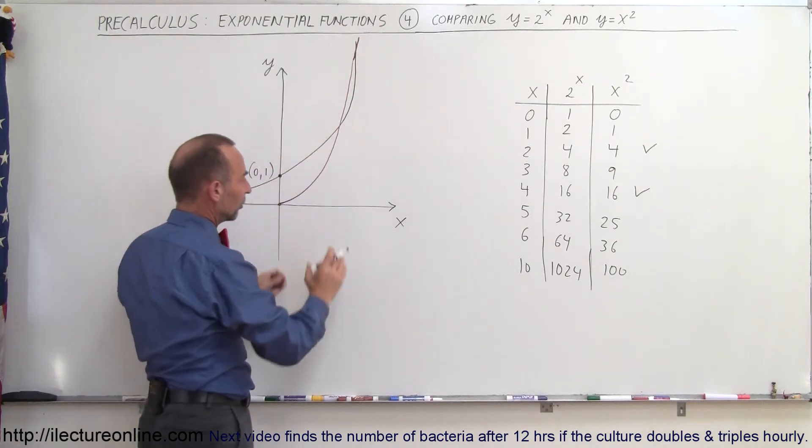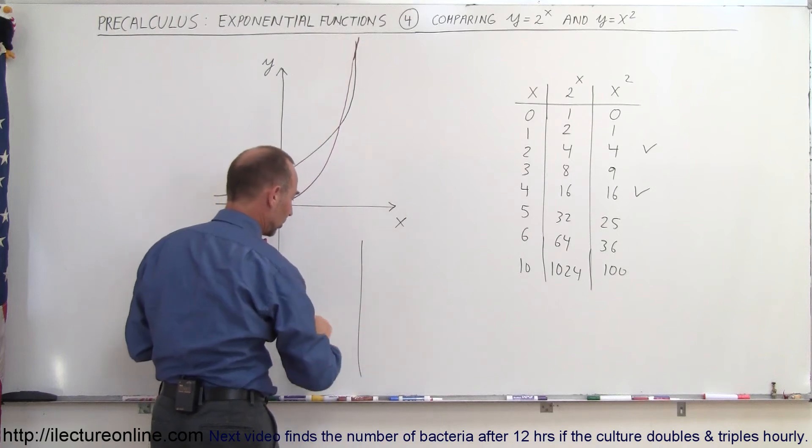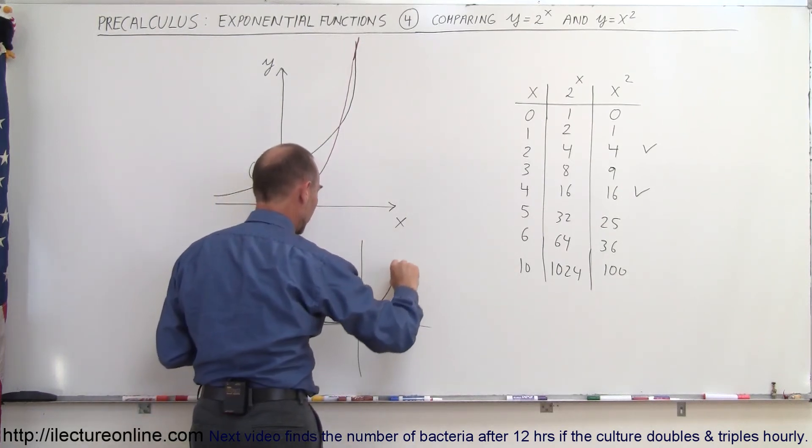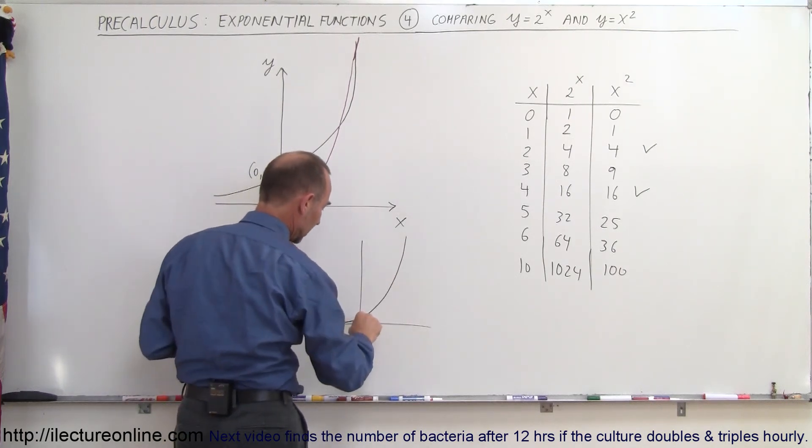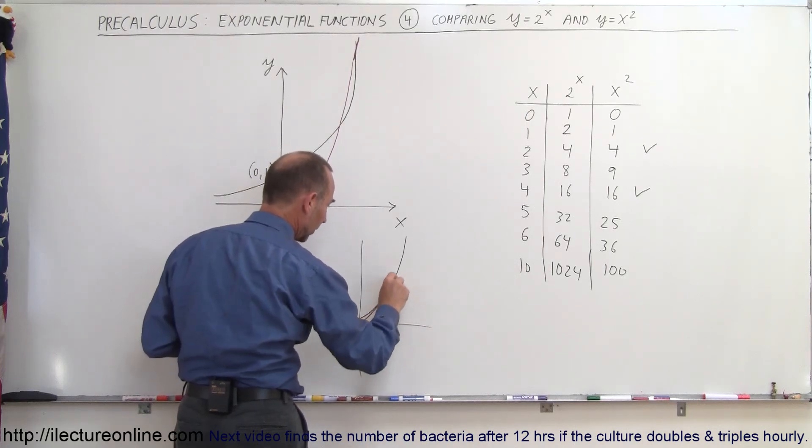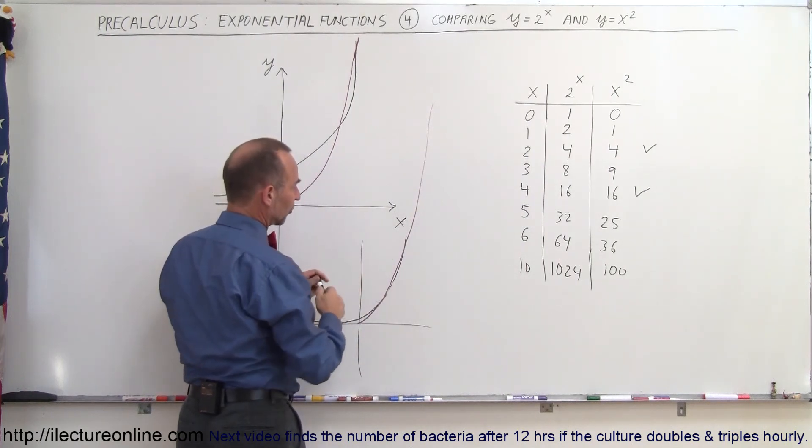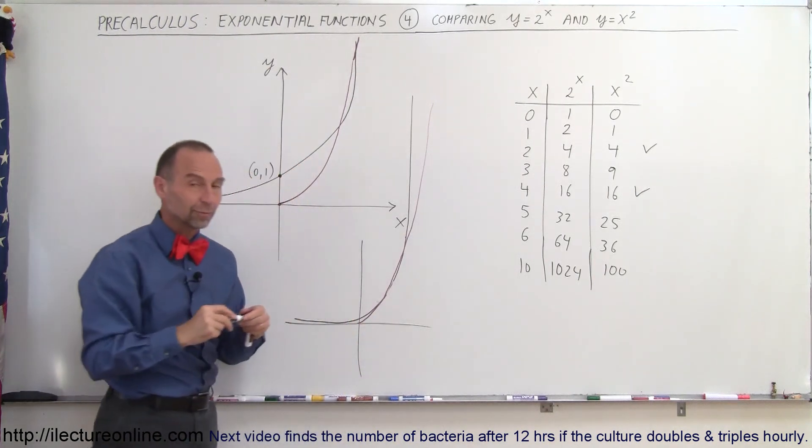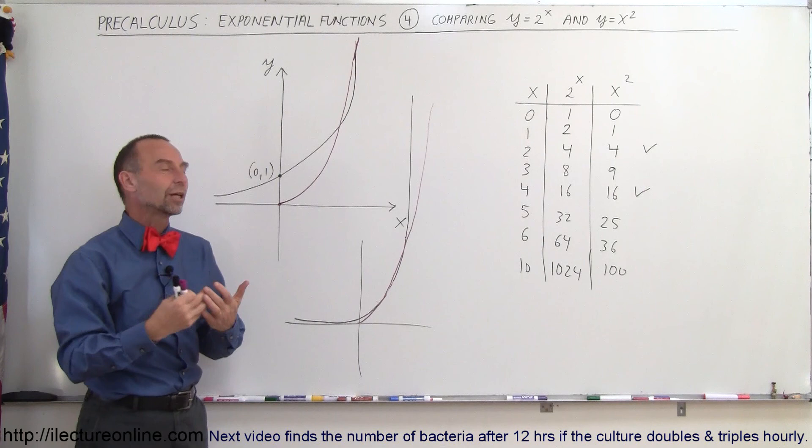So if I want to draw another picture in a little bit different scale, you can see that the functions will look like this. So here's my exponential function and here's my quadratic function. So initially it goes like this. Whoop, it crosses over and then it crosses over again. And you can see that the exponential function will continue to grow at a much faster rate compared to the quadratic function. And as x becomes large, the exponential function becomes extremely large.